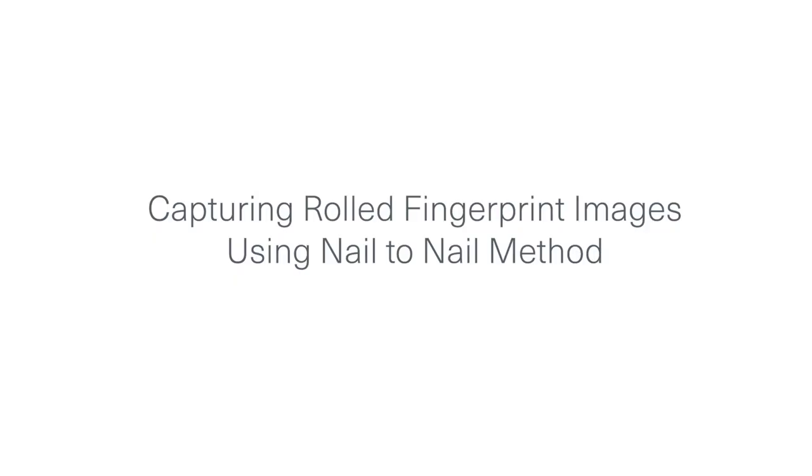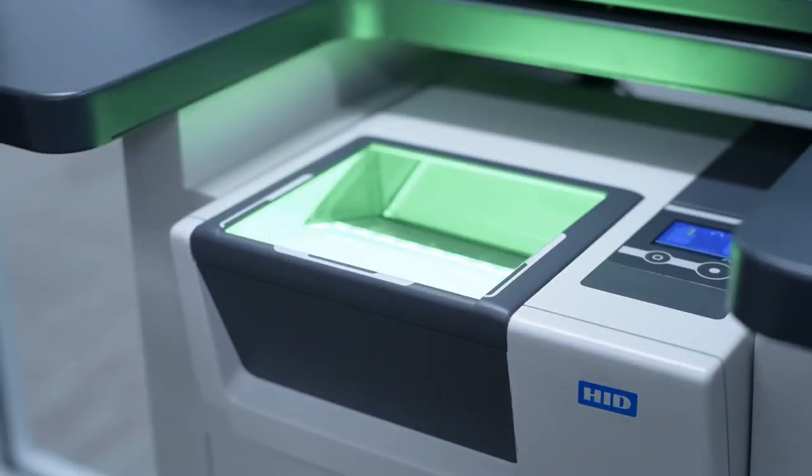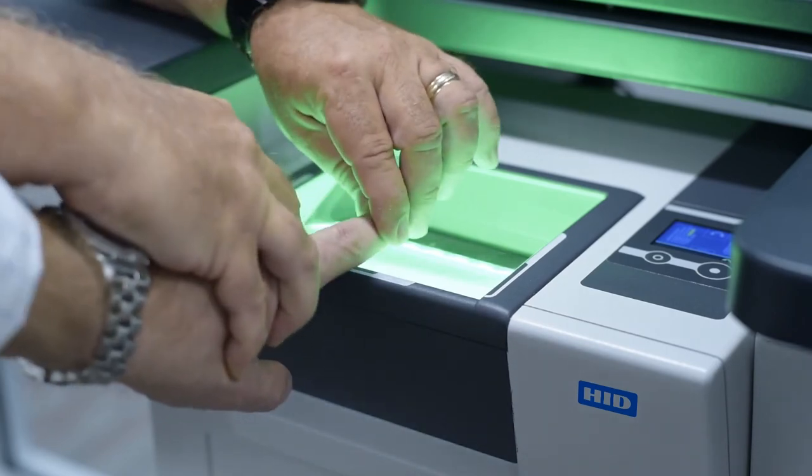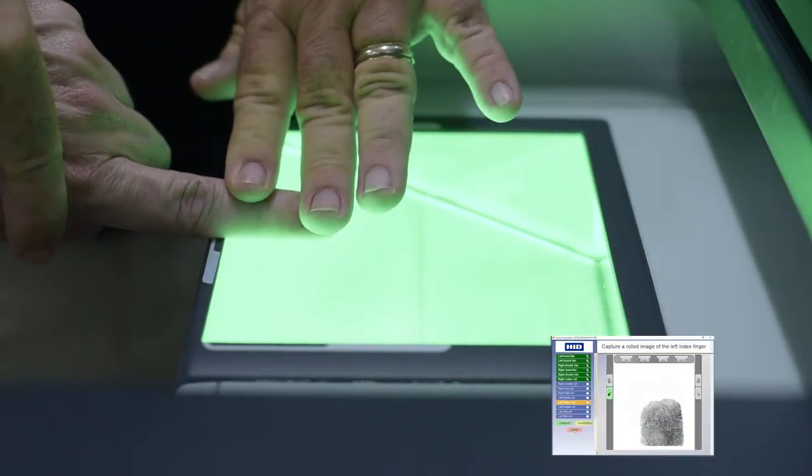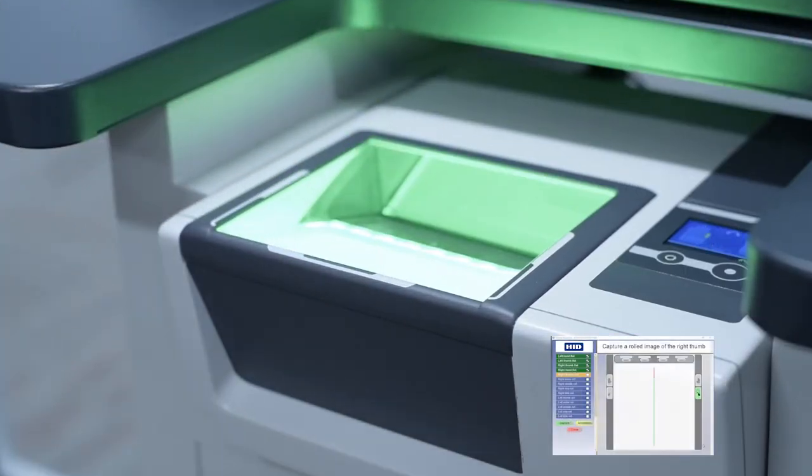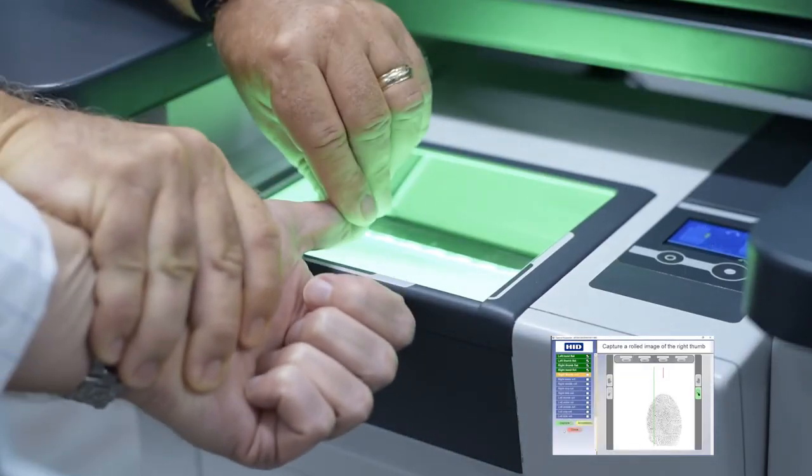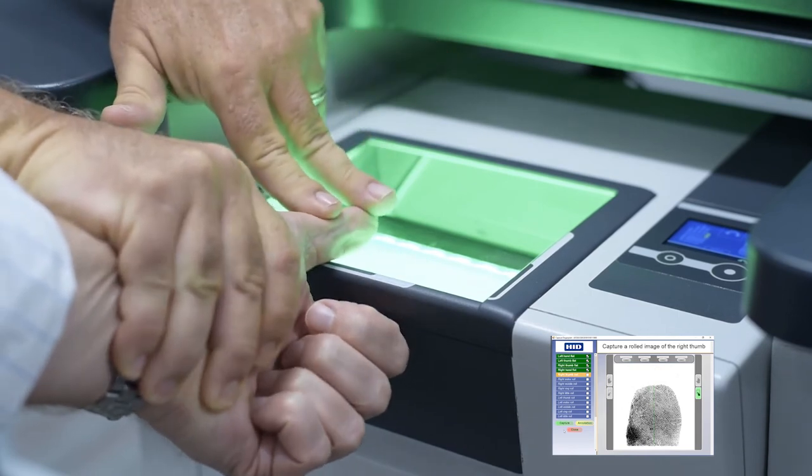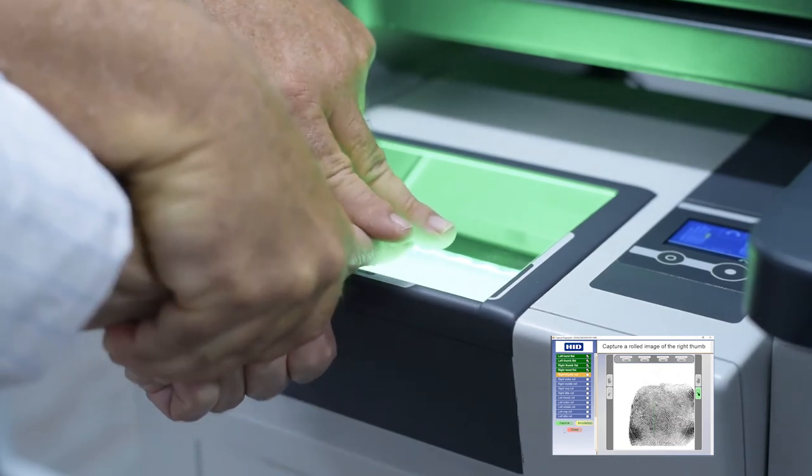Capturing fingerprints using the nail to nail method: notice how the operator is able to grasp the hand, isolate the finger, and place it on its side on the platen. The operator then smoothly rolls from nail edge to nail edge in one motion. The same procedure is used for rolling thumbs as well as fingers.